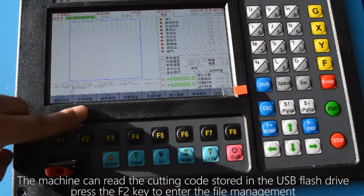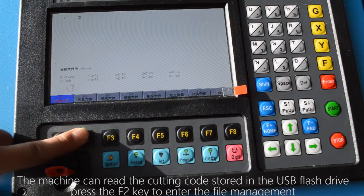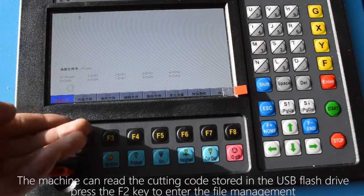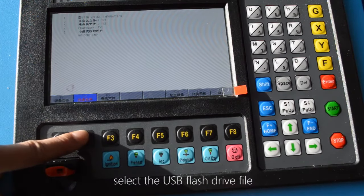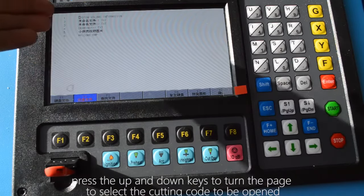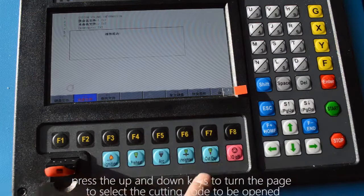The machine can read the cutting code stored in the USB flash drive. Press the F2 key to enter the file management. Select the USB flash drive file. Press the up and down keys to turn the page to select the cutting code to be opened.